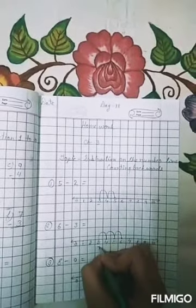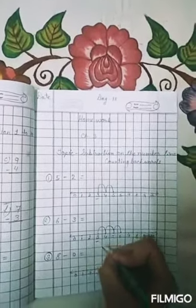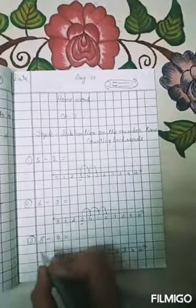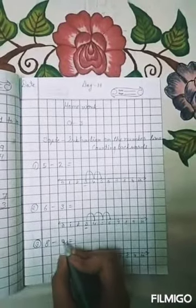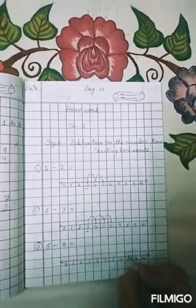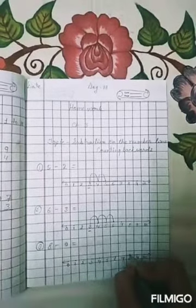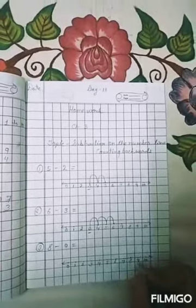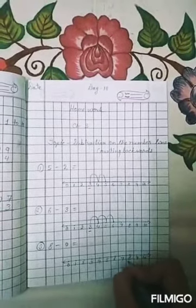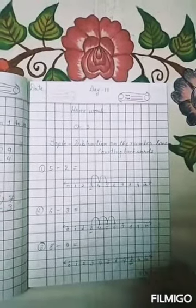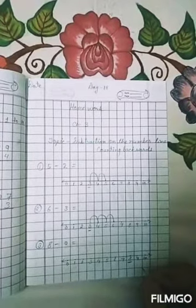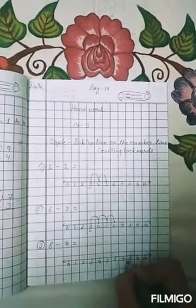So your answer is 3. Next, 8 subtract 0. This is quite interesting. 0 means nothing, so you will subtract nothing. You will not go any step back of 8. Therefore your answer is 8.